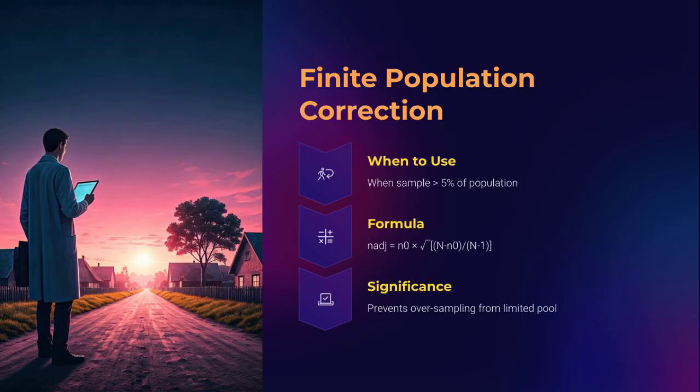When your study population is small, sampling more than 5% of it risks overrepresentation. That's where Finite Population Correction, or FPC, comes in — it adjusts the required sample size downward, preventing waste and ethical burden. The formula is: adjusted N equals unadjusted N divided by 1 plus (N minus 1) over the total population. If you're studying students in one school, a remote village, or a closed registry, FPC isn't optional — it's essential.